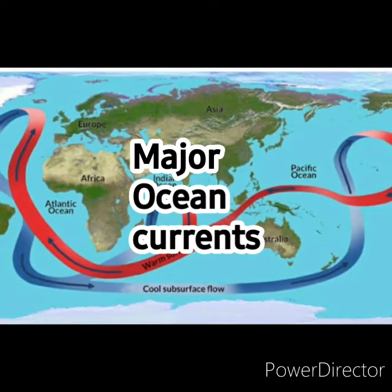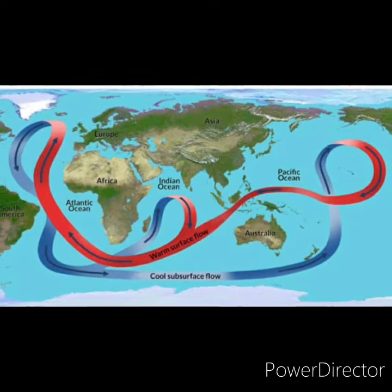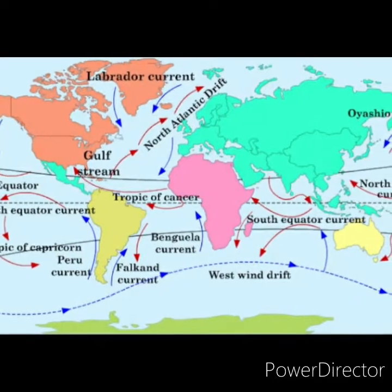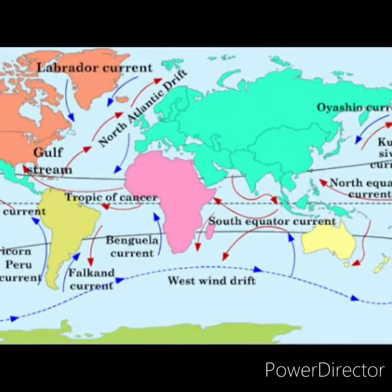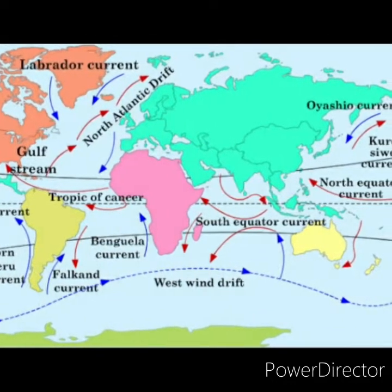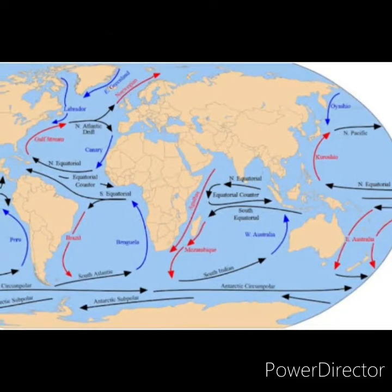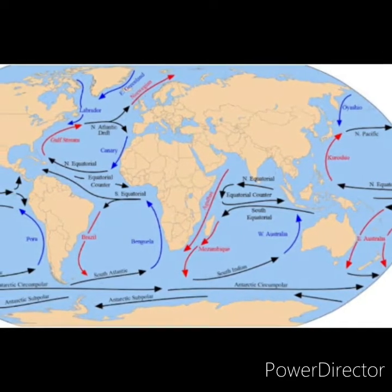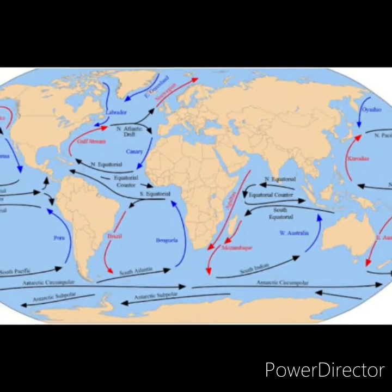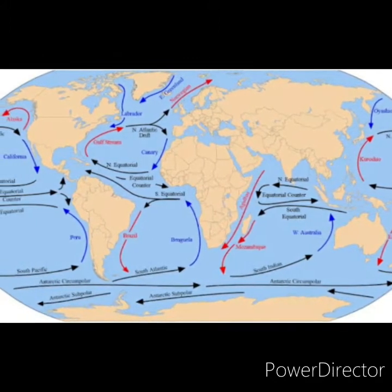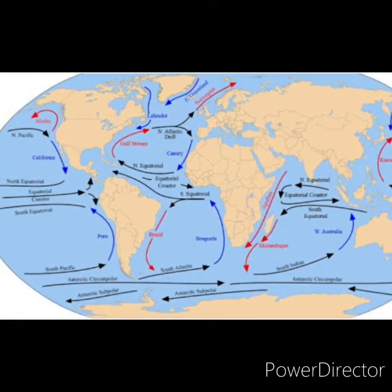Major ocean currents and their effects: In the South Atlantic Ocean, the Benguela current is a cold current that leads to foggy conditions along the coast of Namibia and helped in the development of the Namibian and Kalahari deserts. In the North Atlantic Ocean, the Canaries and Labrador are cold currents, while the Gulf Stream and North Atlantic Drift are warm currents. The Canaries cold current influences the extension of the Sahara Desert.